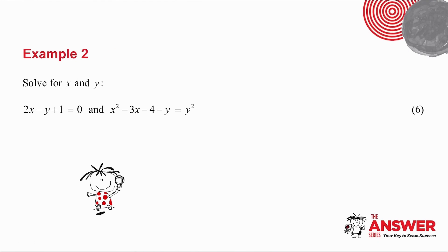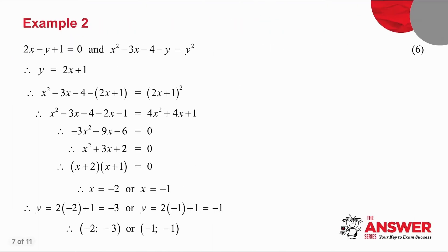Example number 2 is a simultaneous equation. I want you to pause the video. I want you to try this one, and then we'll look at it together. I take the linear equation and I make either x or y the subject of the formula. If I can avoid fractions, I do. So in this example, I'm going to make y the subject of the formula. And I get that y is equal to 2x plus 1.